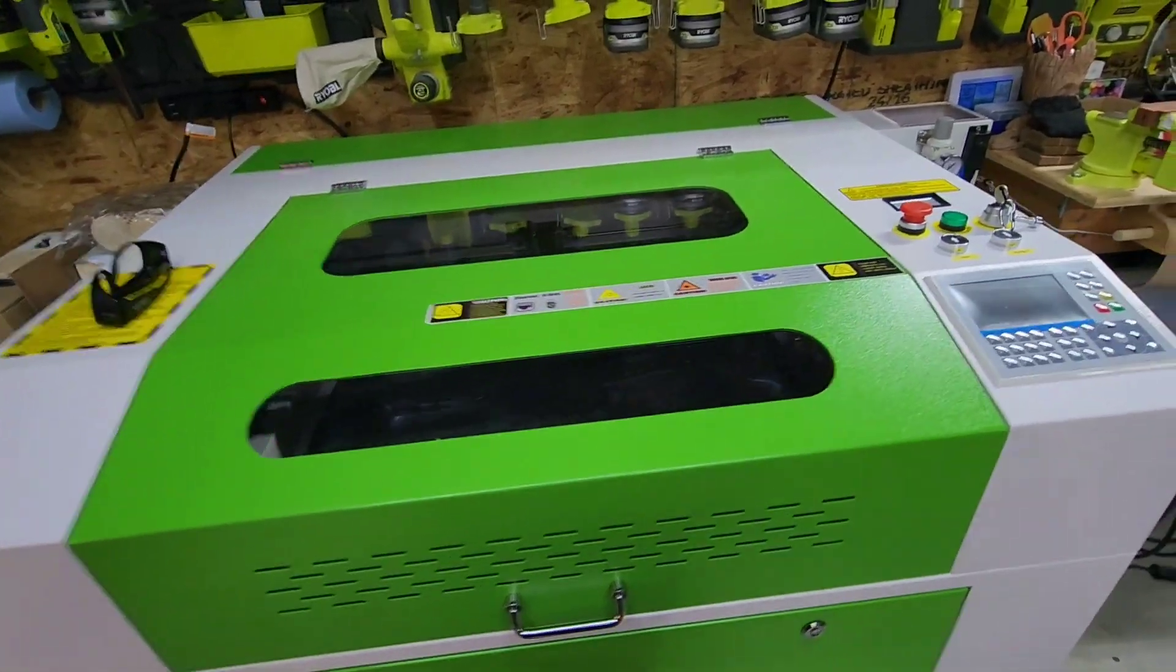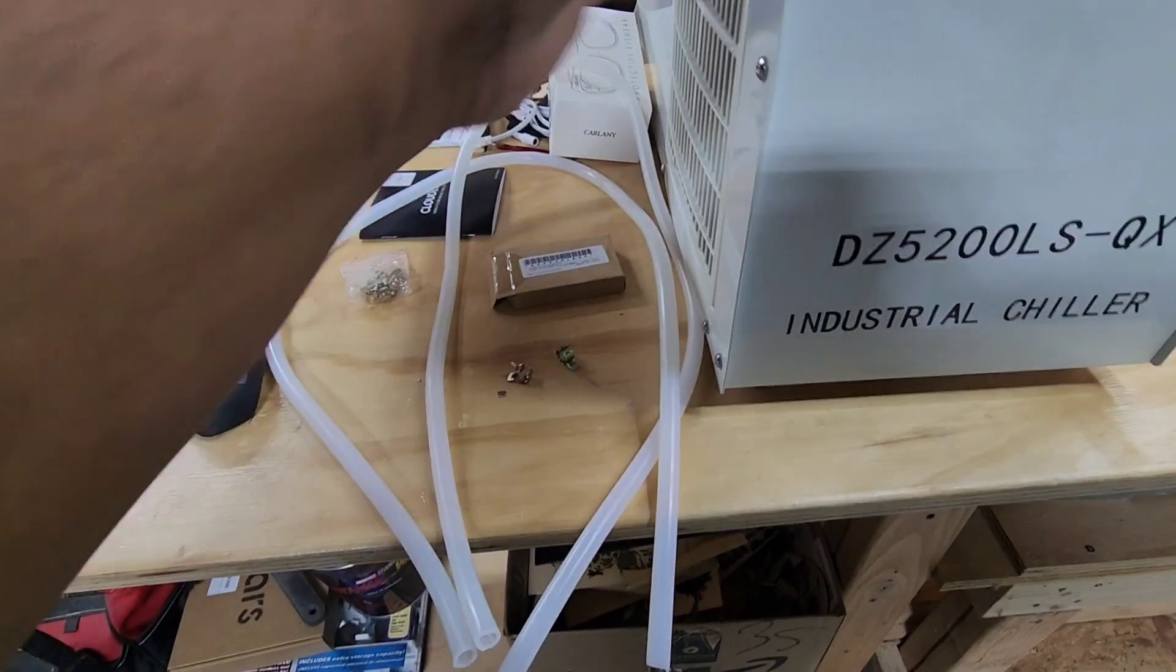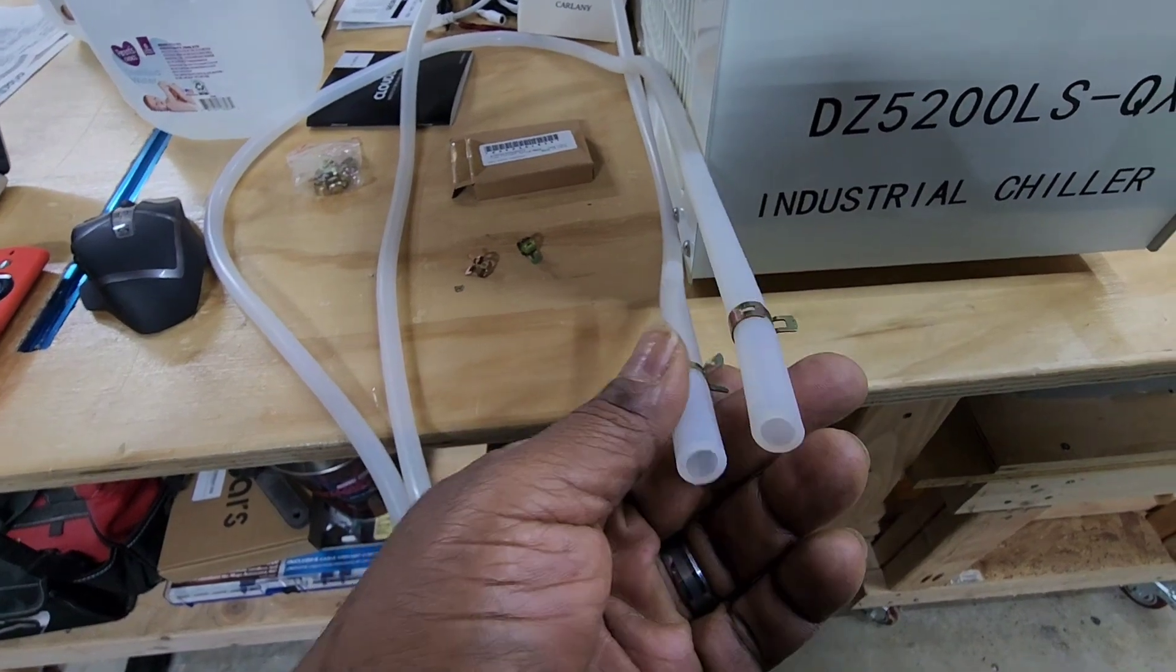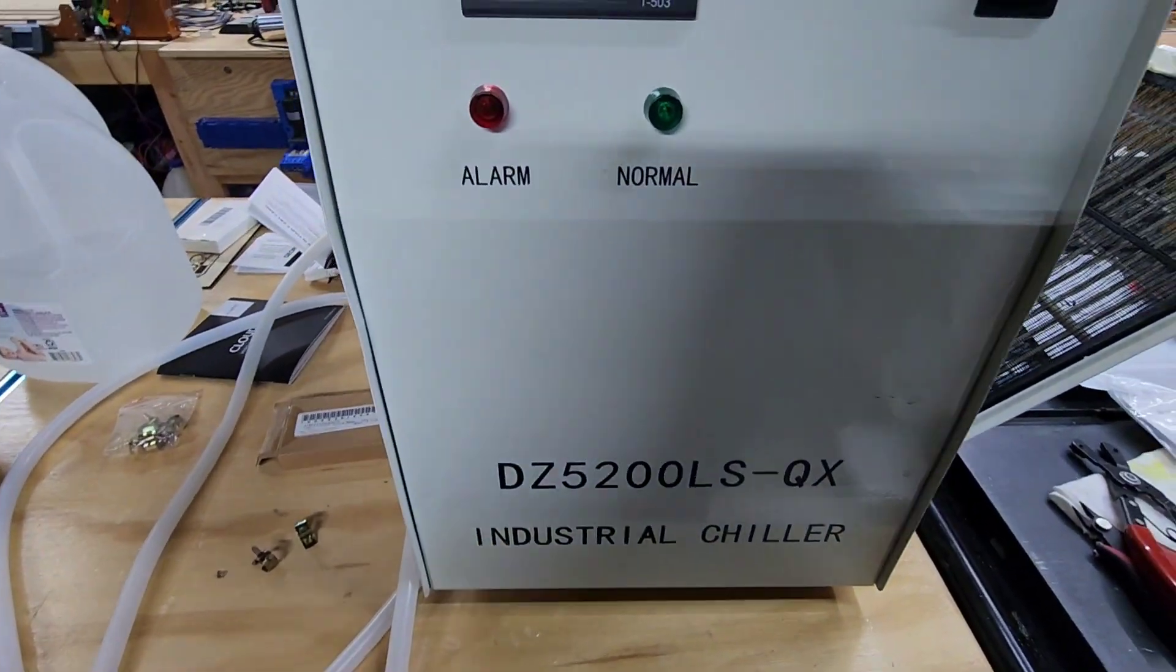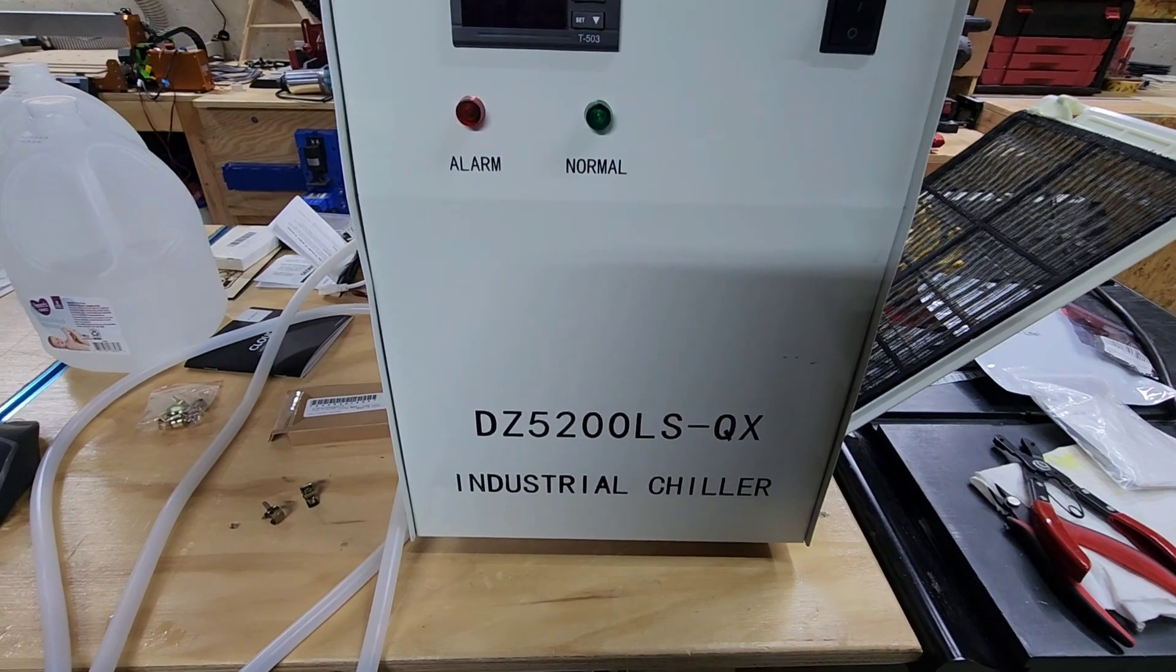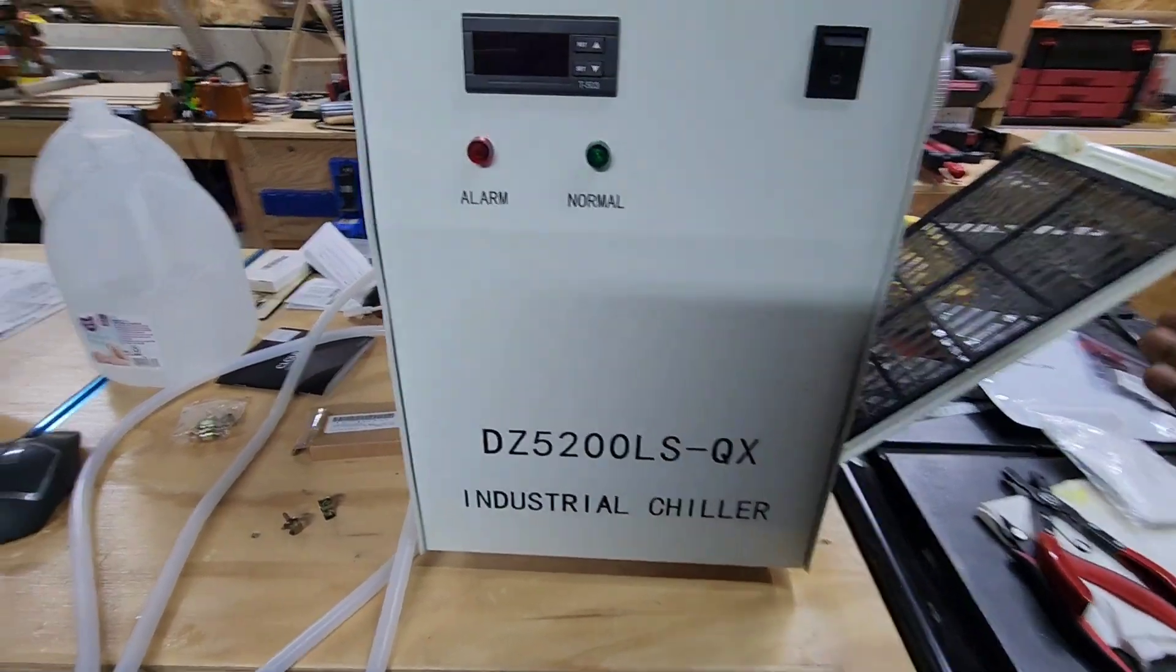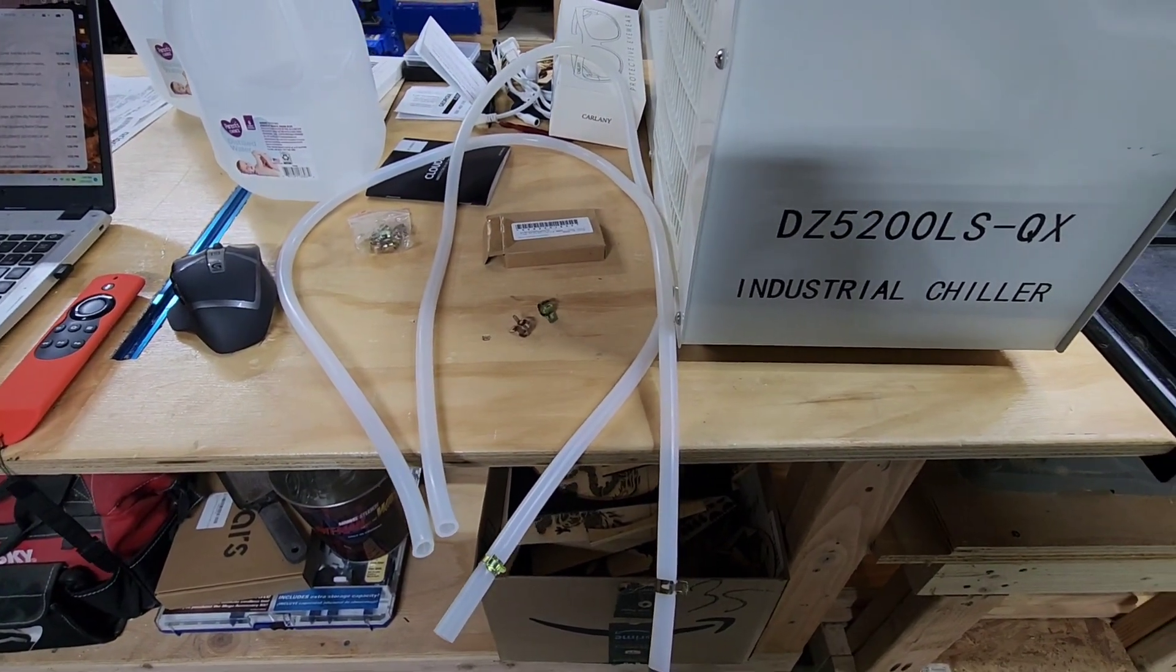I'm going to connect the hoses. The hoses came with the CO2 laser, not with the chiller. I also bought these 11 millimeter 7/16 inch spring band clamps instead of using zip ties. I'm going to use those, so I have four of them. I'm going to put them on each inlet and outlet to connect. You're going to connect the inlet of the chiller to the outlet of the CO2 laser and the inlet of the CO2 laser to the outlet of the chiller. It's a pretty simple setup.